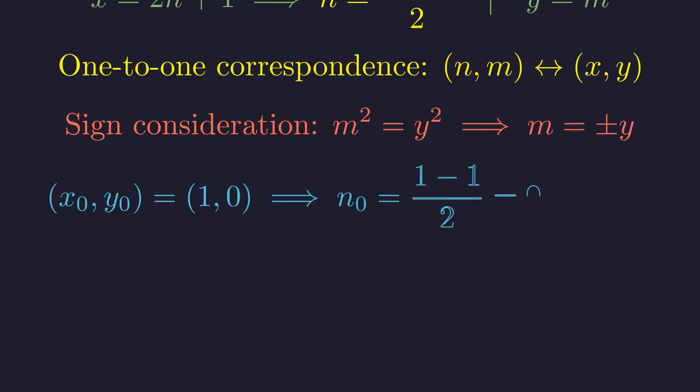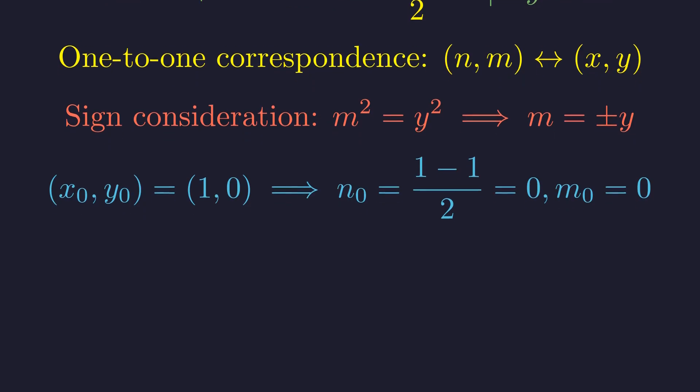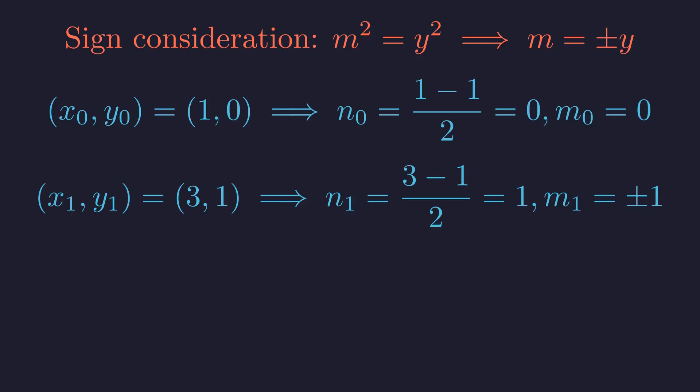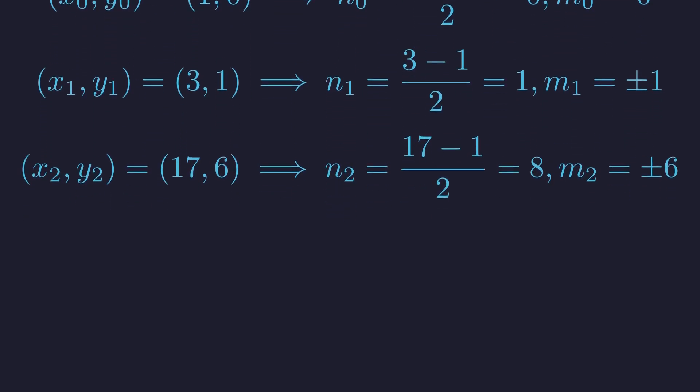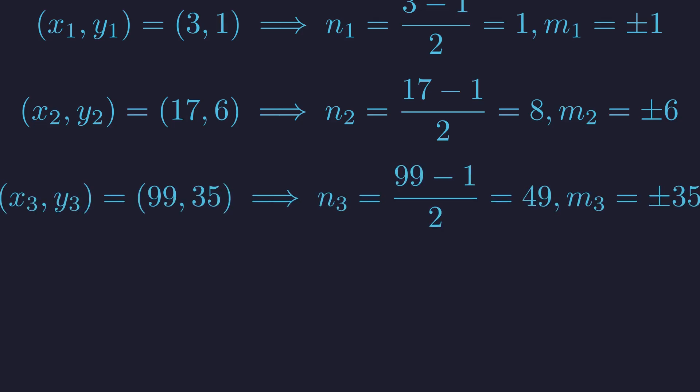The trivial solution gives n sub 0, m sub 0 equals 0, 0. The fundamental solution gives n equals 1, and since m is squared, m can be plus or minus 1. The next solution gives n equals 8 and m equals plus or minus 6. And for k equals 3, we find n equals 49 and m equals plus or minus 35.